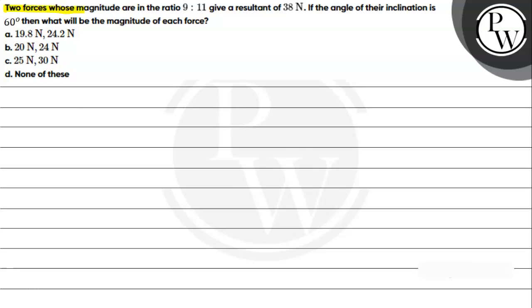Let's read the given question. The question says two forces whose magnitude are in the ratio 9 is to 11 give a resultant of 38 newton. If the angle of inclination is 60 degrees, then what will be the magnitude of each force? Option A: 19.8 newton, 24.2 newton. Option B: 20 newton, 24 newton. Option C: 25 newton, 30 newton. Option D: none of these.